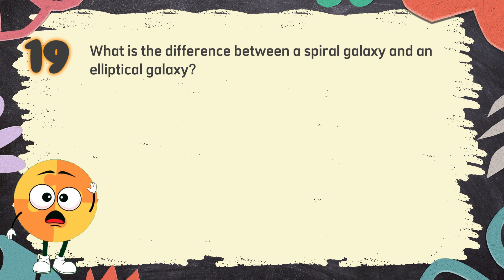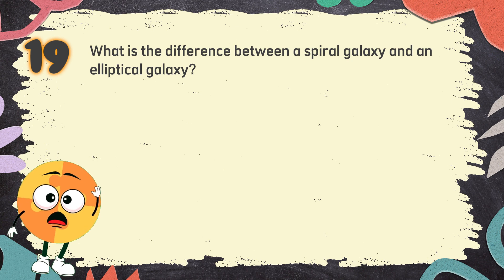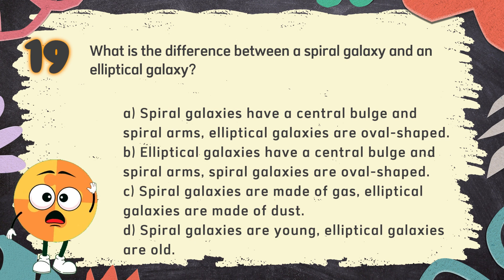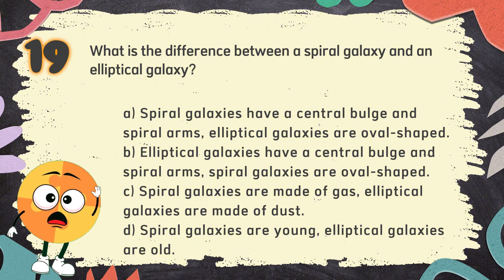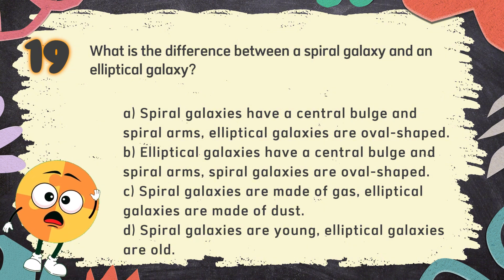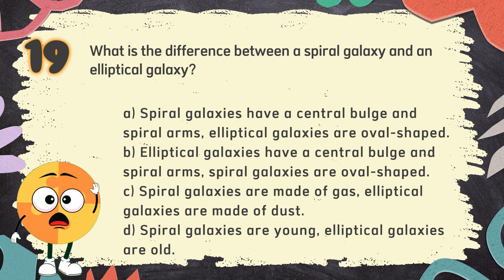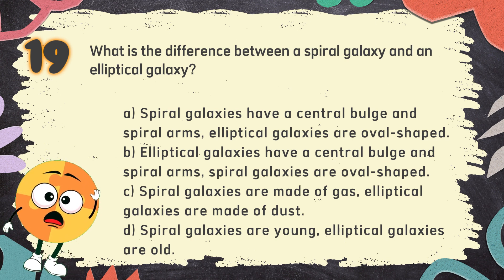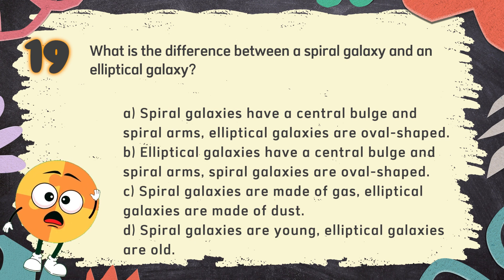Number 19. What is the difference between a spiral galaxy and an elliptical galaxy? The choices are: A. Spiral galaxies have a central bulge and spiral arms; elliptical galaxies are oval-shaped. B. Elliptical galaxies have a central bulge and spiral arms; spiral galaxies are oval-shaped. C. Spiral galaxies are made of gas; elliptical galaxies are made of dust. D. Spiral galaxies are young; elliptical galaxies are old.